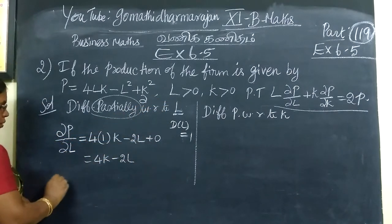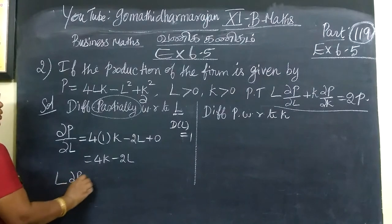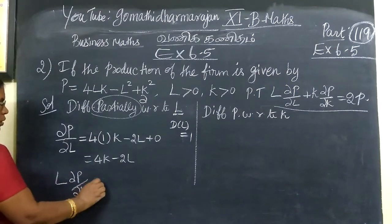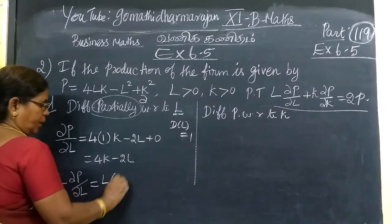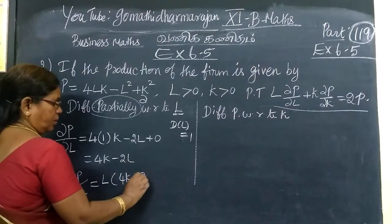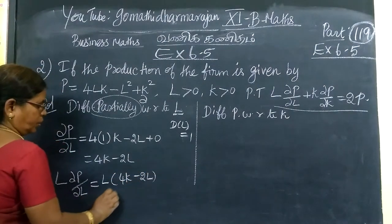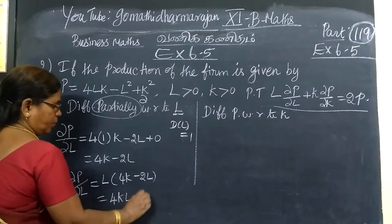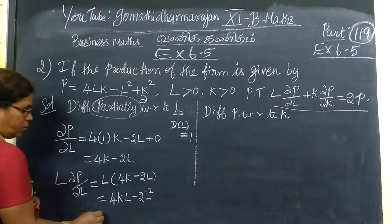Now L into ∂P by ∂L equals L bracket 4K minus 2L, which equals 4KL minus 2L square.